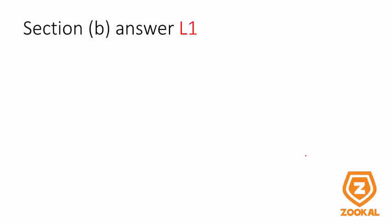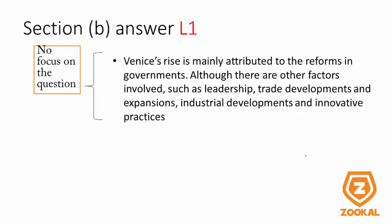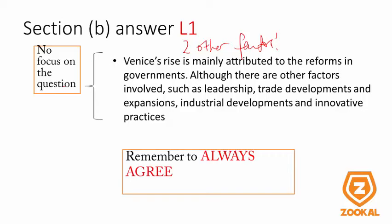Let's look at L1 for section B. When the rise is mainly attributed to reforms in government, you are not answering the question because they are asking you to identify two other factors. And saying that although there are other factors such as leadership, they are not important — you are also not answering the question because you need to always agree first.